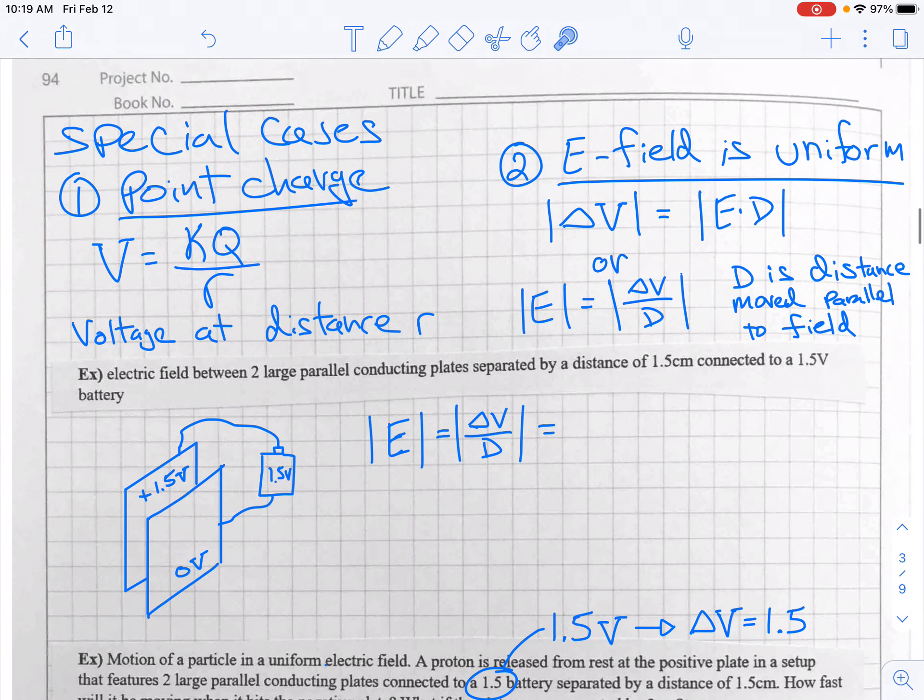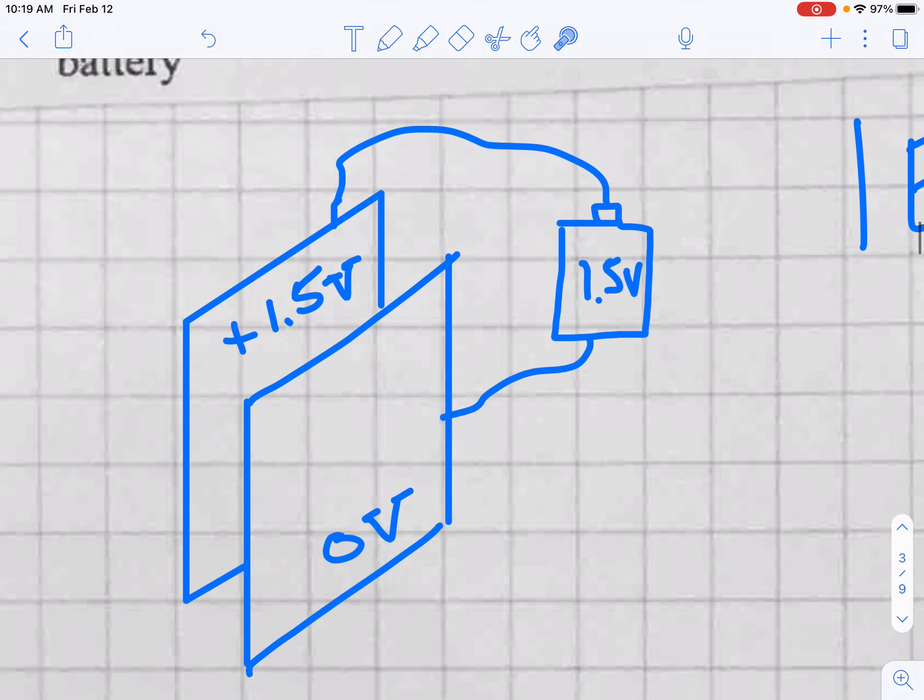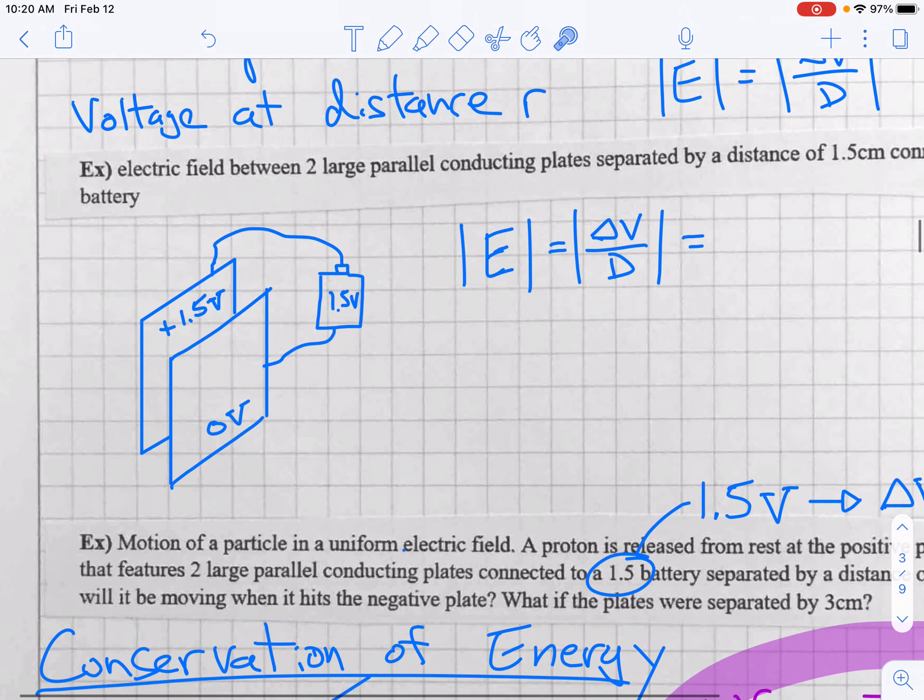So what is the electric field between two large parallel plates that are connected to a battery? Well, this is what it might look like. Two parallel plates. The negative side of the battery, we would take that to be zero volts. The positive side, 1.5 volts. This zero volt bit is really just kind of a reference point. It's not important that this is zero and that's 1.5. What's important is that they are 1.5 different than each other. So this could well be 10 and 11.5 or negative 3 and negative 1.5. As long as one's 1.5 higher than the other, that's fine.